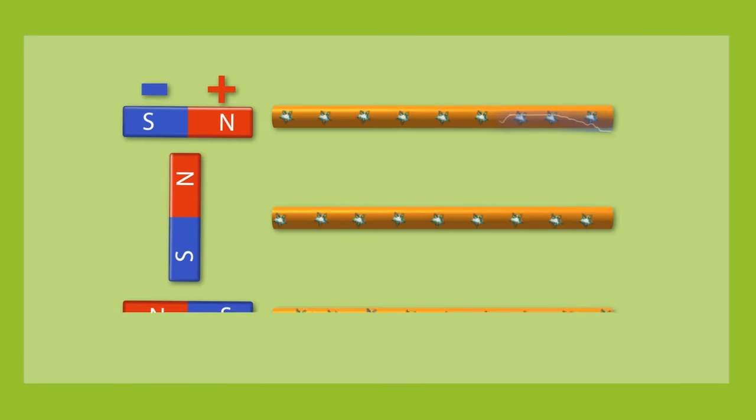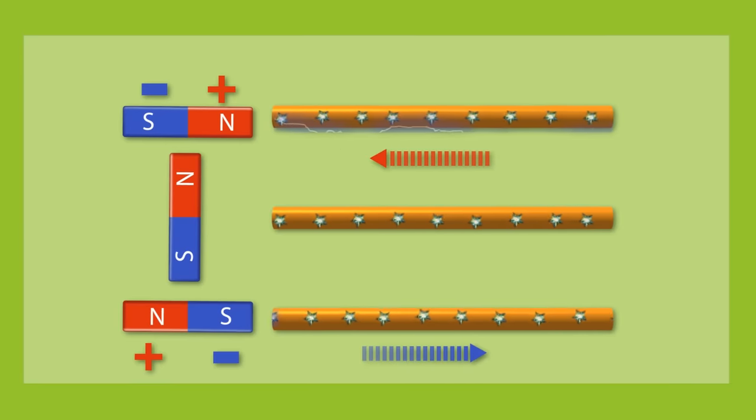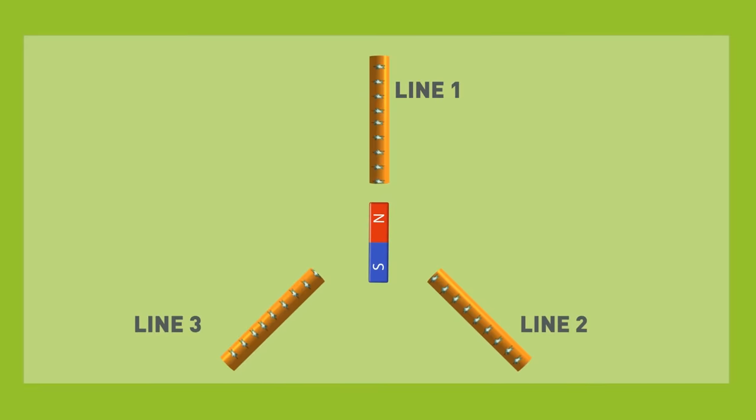In the alternating current video, we showed how spinning a magnet past one wire caused the current to flow back and forth. Now we're going to spin a magnet past three wires and see the effect that has on the current in each wire.